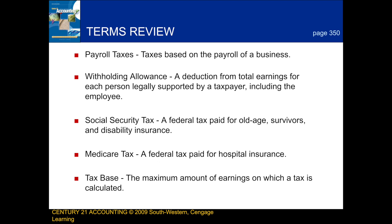A social security tax is a federal tax paid for old age, survivors, and disability insurance. A Medicare tax is a federal tax paid for hospital insurance. And a tax base is the maximum amount of earnings on which a tax is calculated.